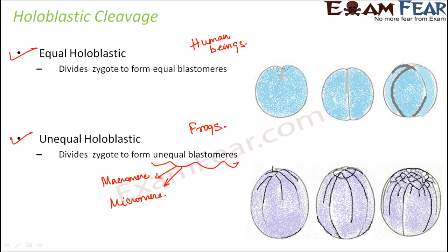Looking at the picture, you can see that cleavage is only happening towards the upper side — not much cleavage below. So even though the complete structure is being divided, the output is not divided into two exactly equal halves.